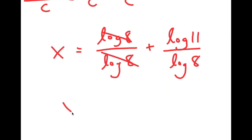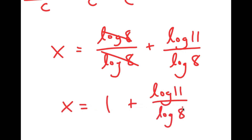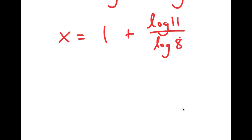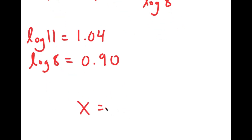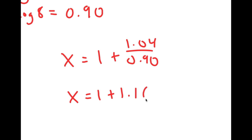Now, log 8 and log 8 cancel out to get 1, so I get 1 plus log 11 over log 8. All that's left is to plug in the actual values: log 11 is approximately 1.04 and log 8 is approximately 0.90. So I get x is equal to 1 plus 1.04 over 0.90, which equals 1 plus 1.16, meaning x is equal to 2.16. So this is my answer.